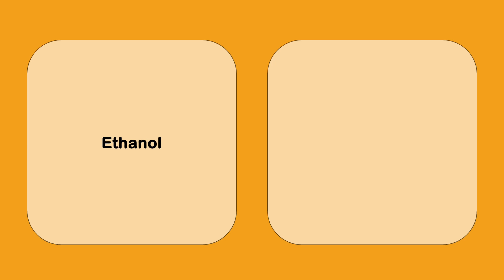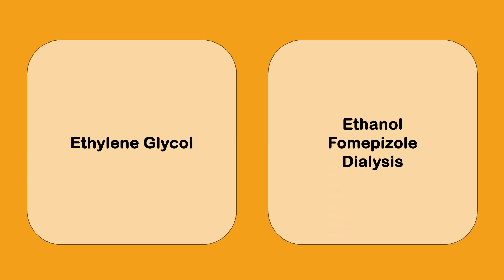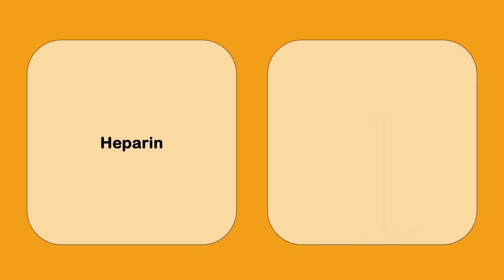Ethanol, if somebody's overdosed on ethanol you can use fomepizole. Ethylene glycol, if somebody's overdosed ethylene glycol which is found in antifreeze, you give them ethanol or fomepizole or they go for dialysis.